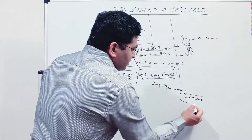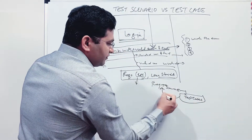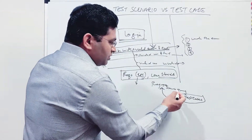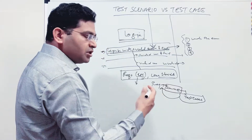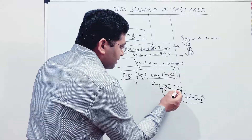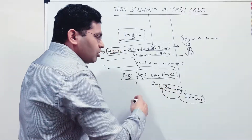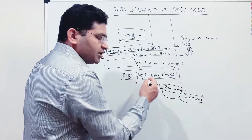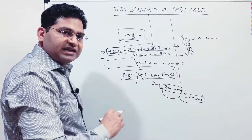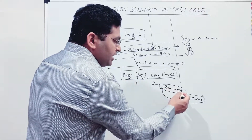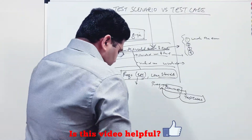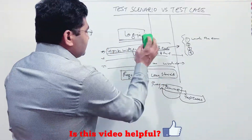This step is very important in practical testing. If you directly start writing test cases from requirements, most of the time you will miss some steps. By first writing scenarios, you apply your thought process and tester's mindset to identify what combinations and scenarios can be tested for a particular feature. You write all positive and negative scenarios as quick one-liners, and then converting those one-liners into test cases becomes really easy.